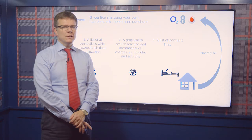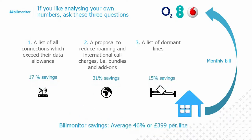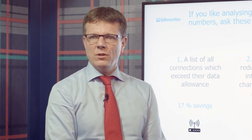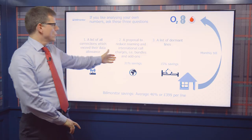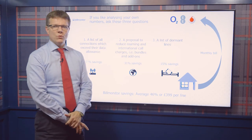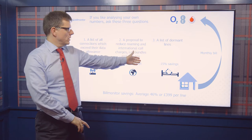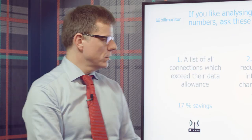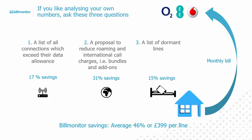Bill Monitor, when we analyze accounts, we identify savings on average of 46% or £399. Out of that £399, 17% relates to lines with excess UK data charges, 31% relates to international calls and roaming charges, and 15% of savings relate to dormant lines — in total 40% savings of £399.